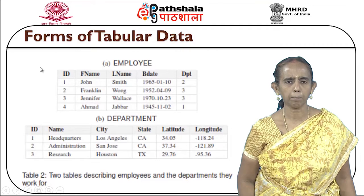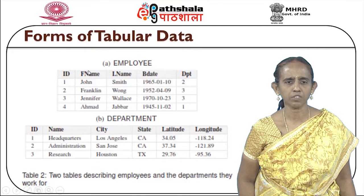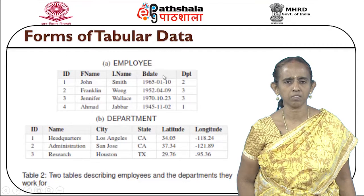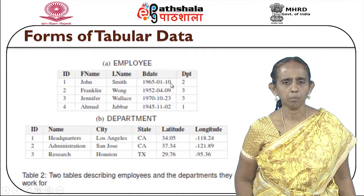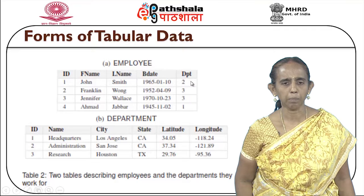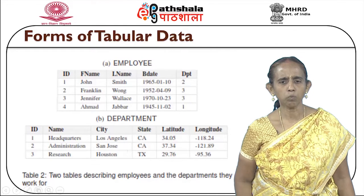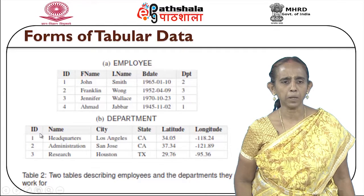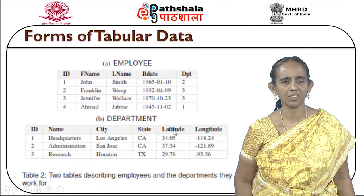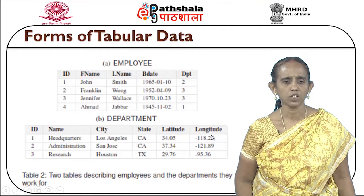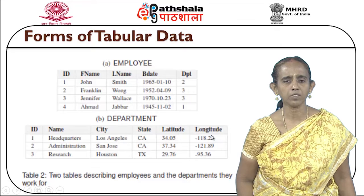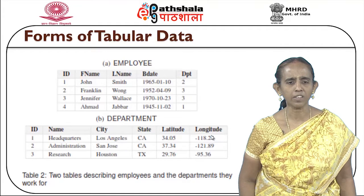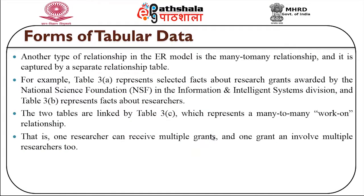The employee table contains fields such as employee ID, first name, last name, birth date and department. The department table contains the ID, name, city, state, latitude and longitude. The two tables describing employees and the departments they work for are forms of tabular data.